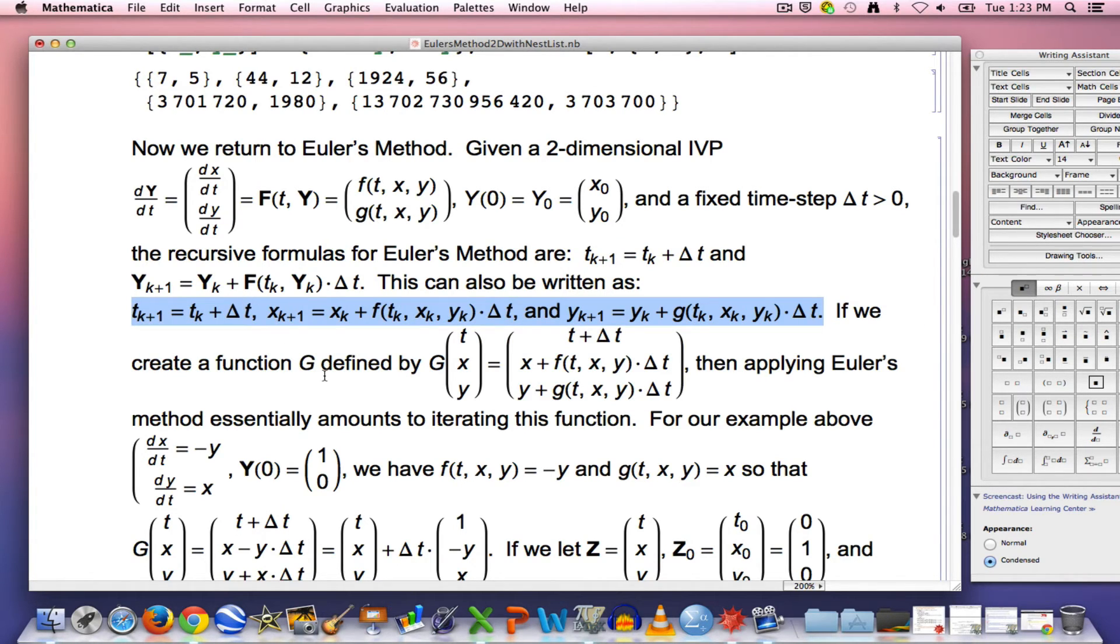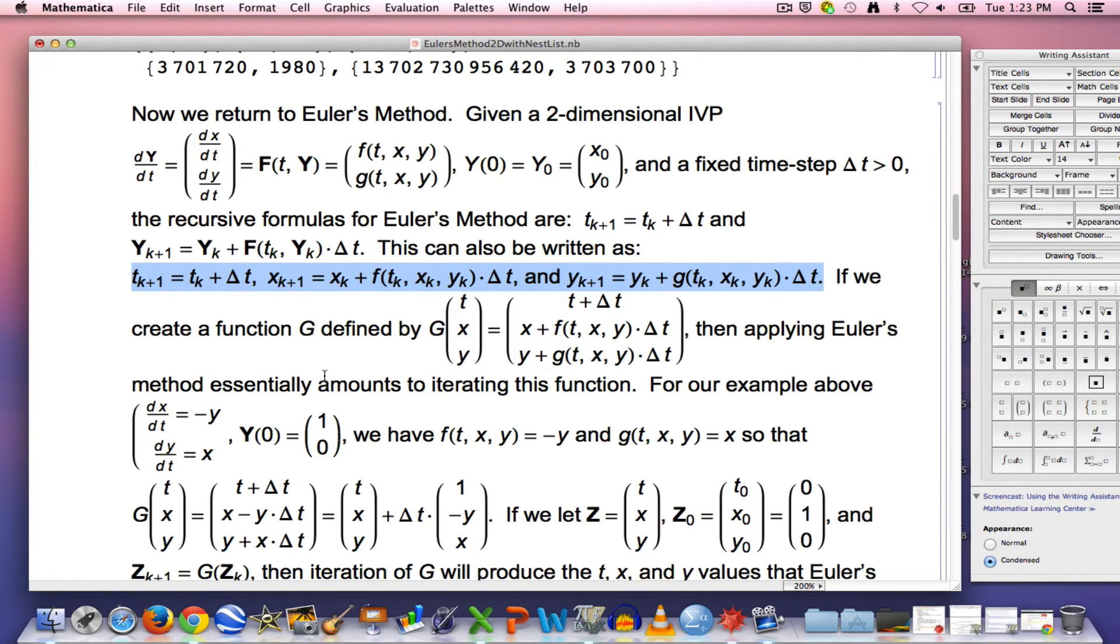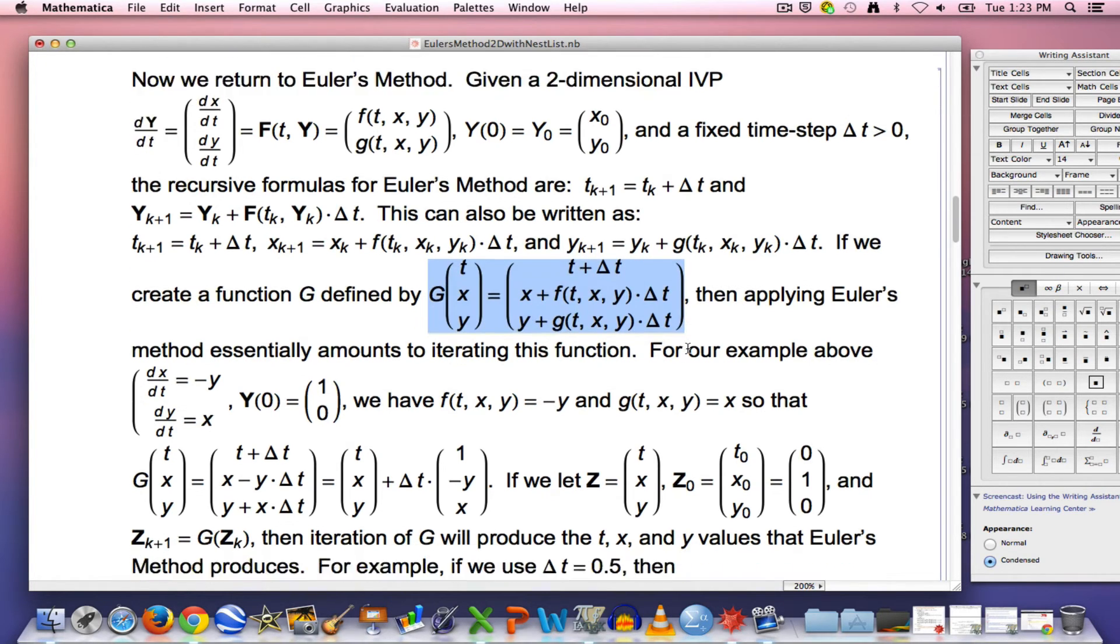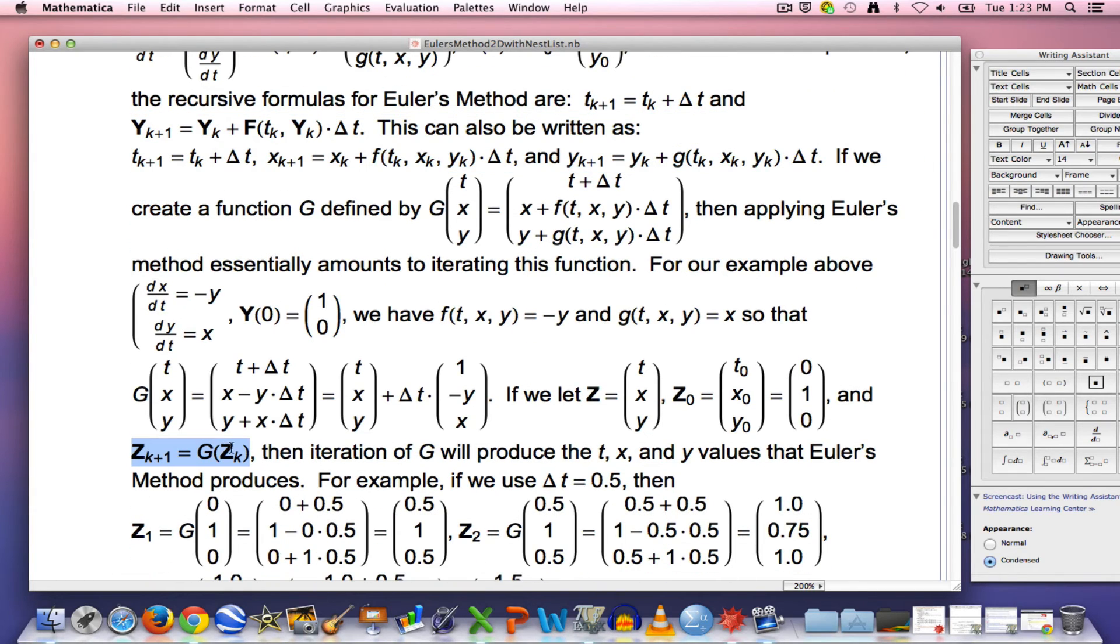Going all the way over here. What we can do essentially is we can iterate this process with nest list by defining a function, a new function that I've called capital G just to pick something different. If you think about this and compare this equation with these other equations, I hope it's clear after some thought that iterating G, using G in a recursive form with this equation down here, will implement Euler's method based on picking initial values for t, x, and y. This is going to be a function with a three-dimensional input and a three-dimensional output so that we can include the t values in here. This is going to implement Euler's method. I hope you see. Spend some time thinking about it.